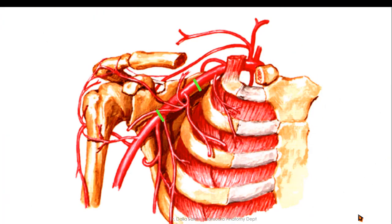In this picture we can see a summary of the branches of the axillary artery. From the first part we have the superior thoracic artery, which supplies the upper two intercostal spaces. From the second part we have the thoracoacromial artery and the lateral thoracic artery. From the third part we have the subscapular artery dividing into thoracodorsal and circumflex scapular, plus the anterior and posterior circumflex humeral arteries, both wrapping around the surgical neck of the humerus.